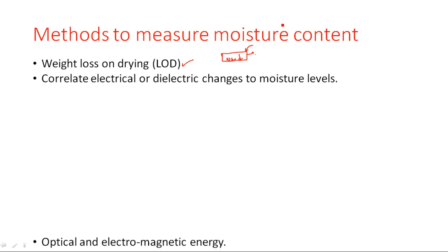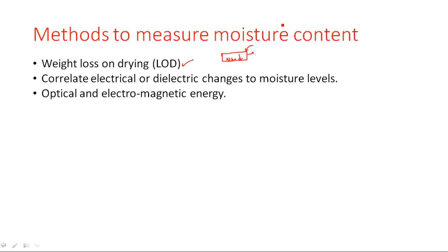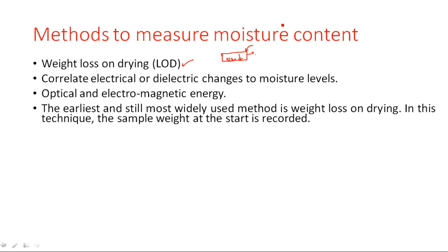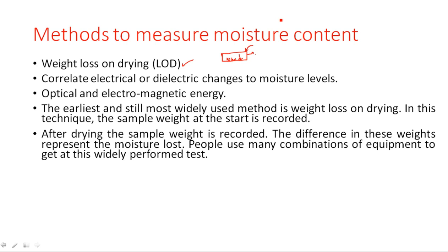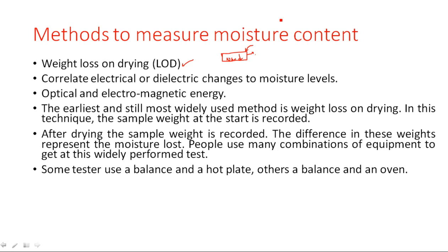The earliest and still most widely used method is weight loss on drying. In this technique, the sample weight at the start is recorded, then after drying the weight is noted again. The weight difference between these two represents the moisture lost. People use many combinations of equipment for this test — some use a balance and a hot plate, others use a balance and an oven.